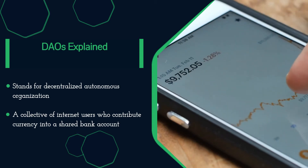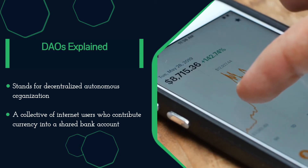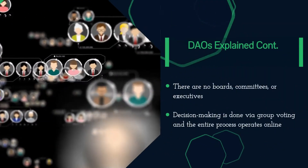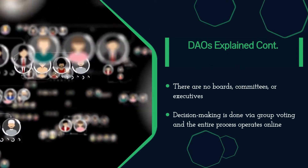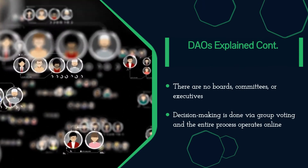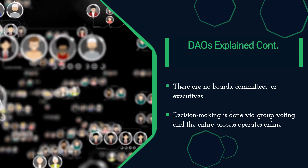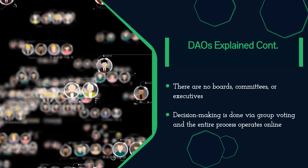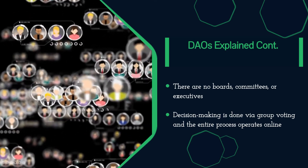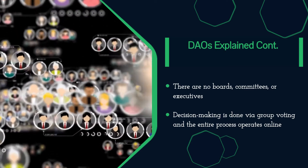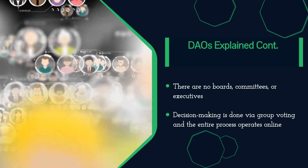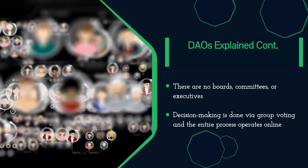All decisions are made collaboratively and implemented by a community that follows the rules enforced via blockchain. These internet-native organizations are owned and managed by their members, with no one member above another. There are no boards, committees, or executives. Instead, rules previously agreed upon are hardwired via code and executed automatically by the online network that powers the DAO. Decision-making is done via group voting, and the entire process operates online.